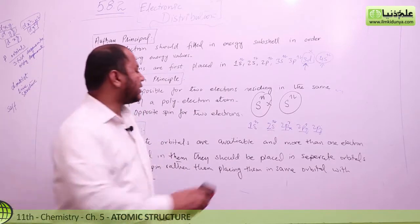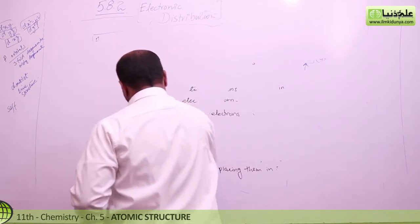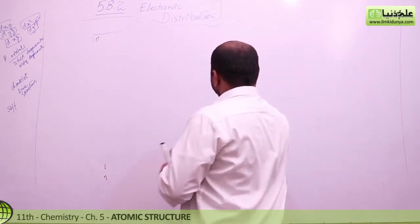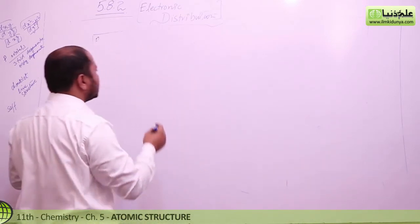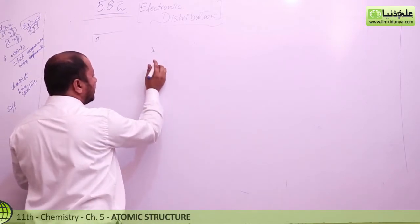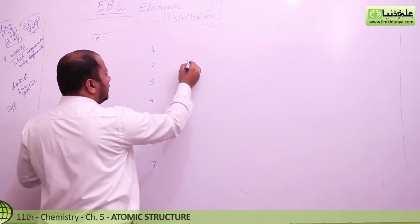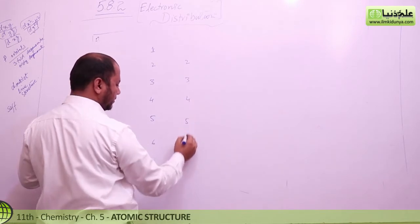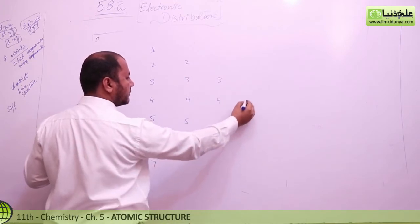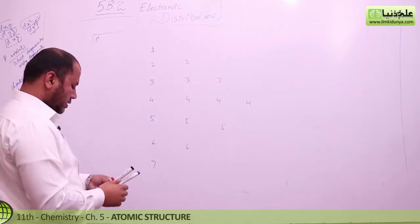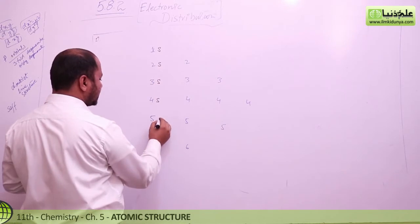Now let me briefly explain how to do electronic configuration. To know about the energies of different sub-shells, I will make a table in front of you. Follow it carefully so that you can easily write the electronic configuration for different elements.